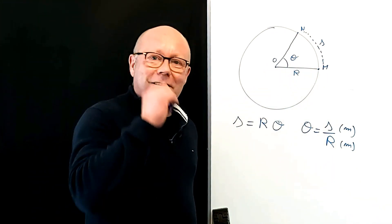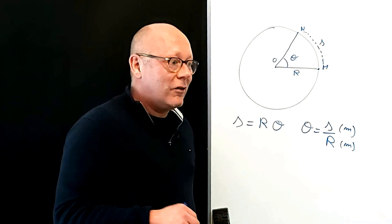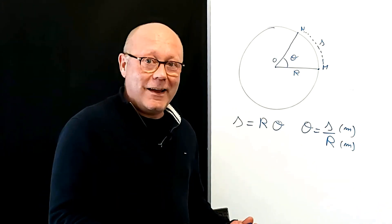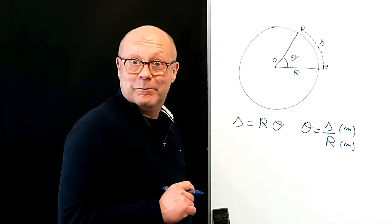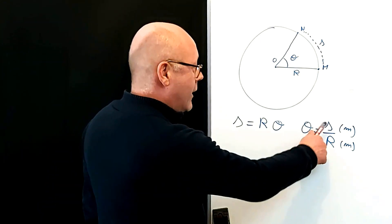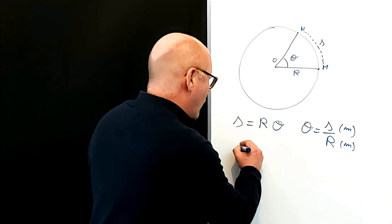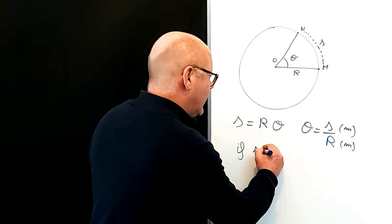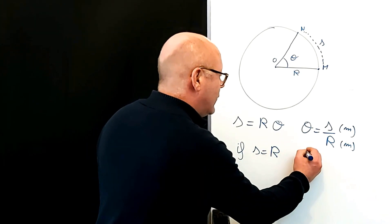Well, that makes me quite uncomfortable as a physics teacher because I use angles all the time. I need a unit, right? So let's define one. When would the angle be 1? Well, it's a ratio of S of R. So when S equals R, theta would be 1.